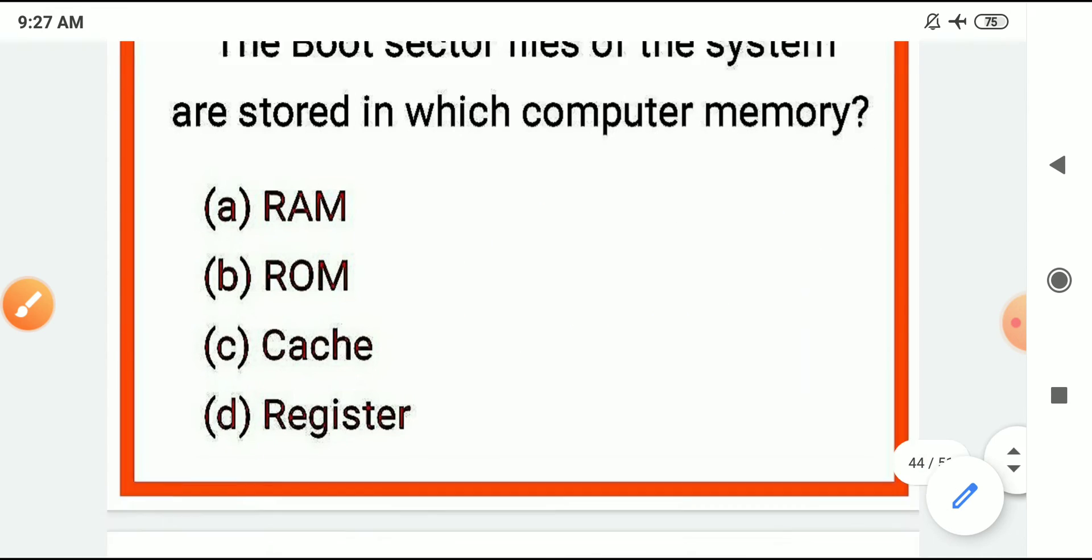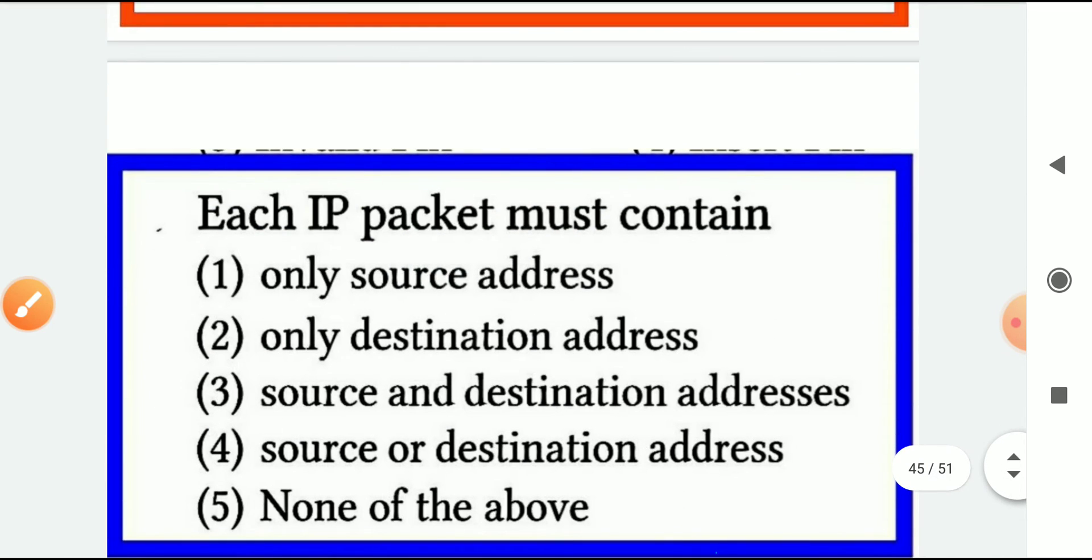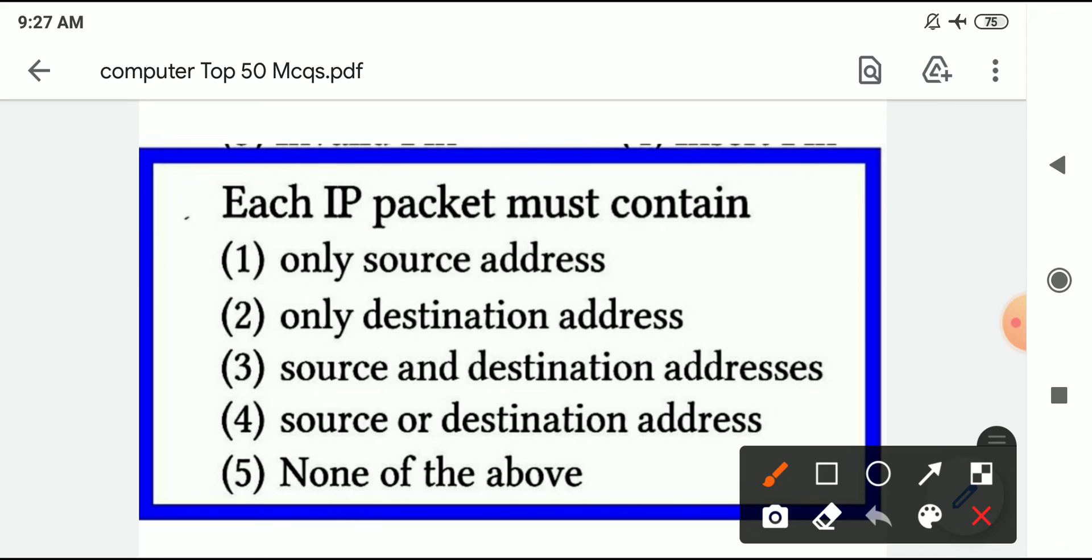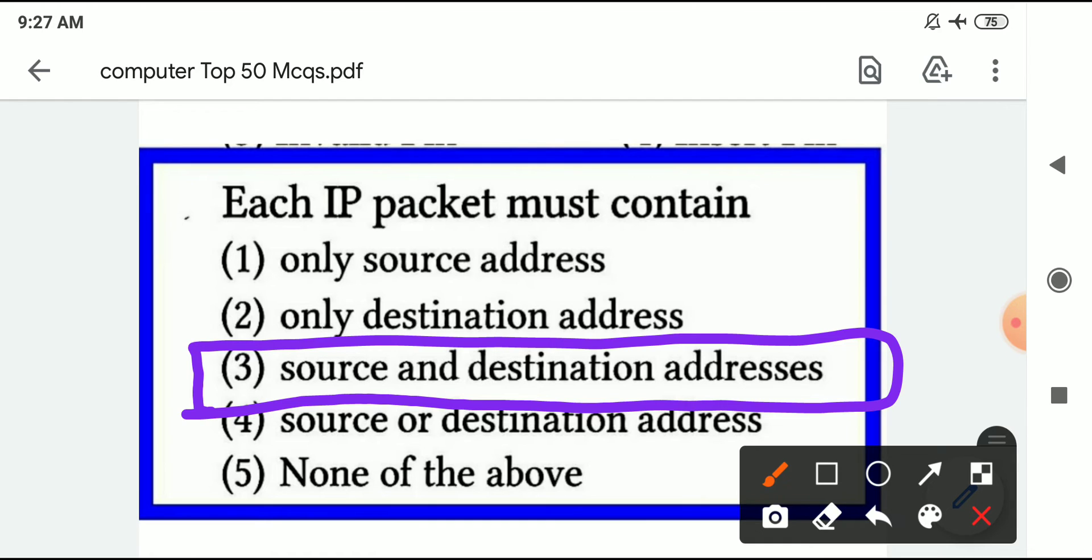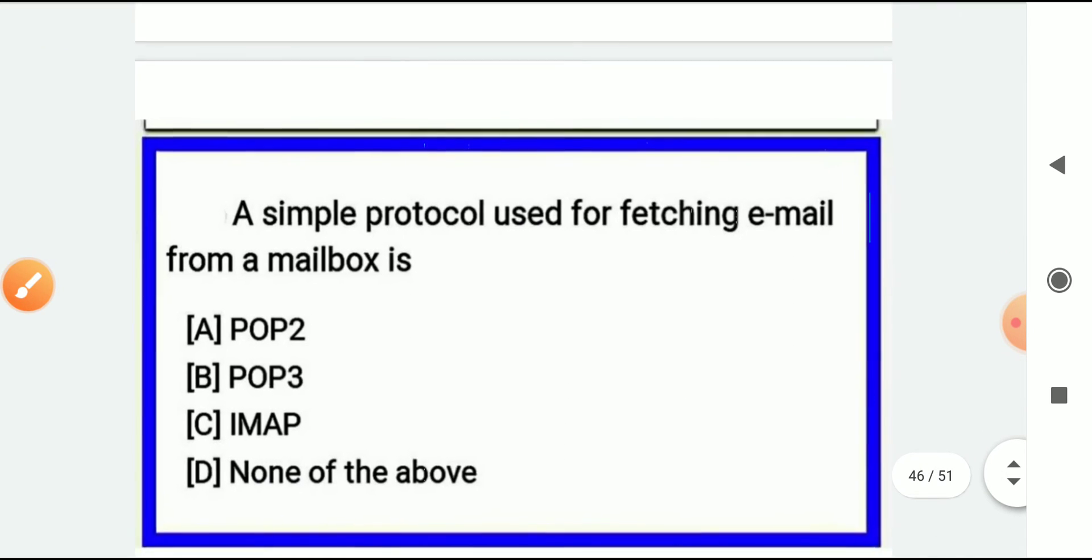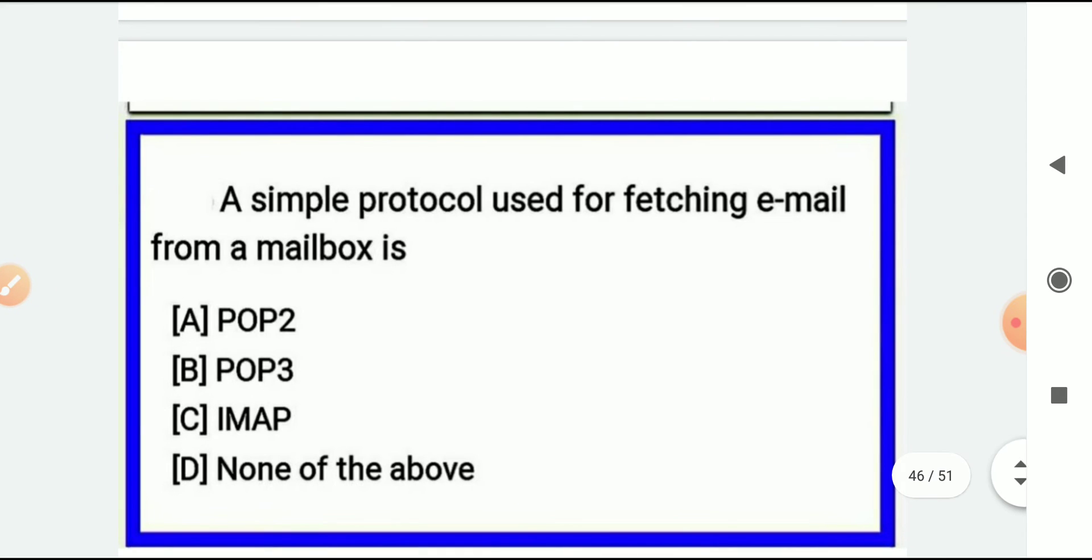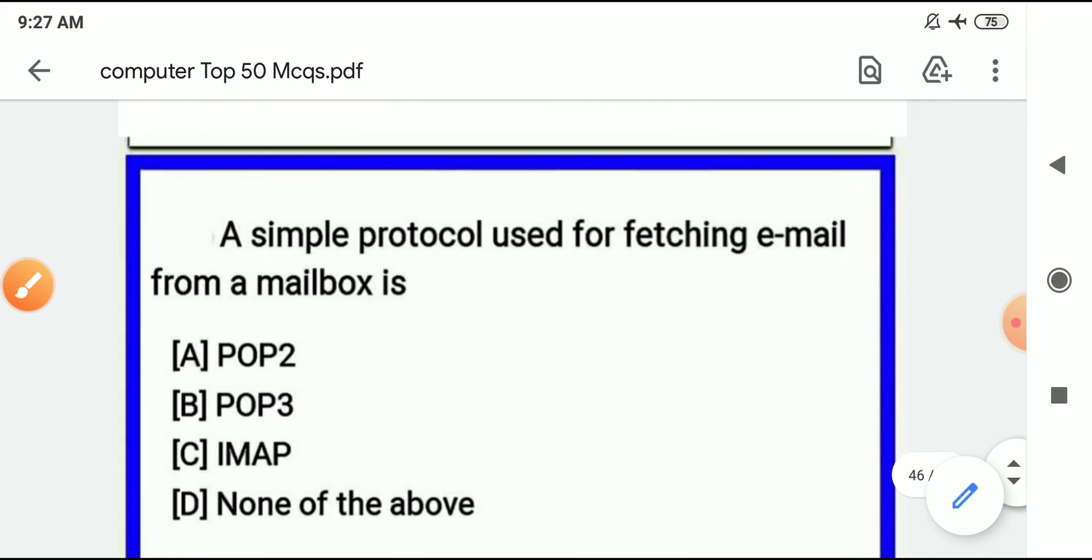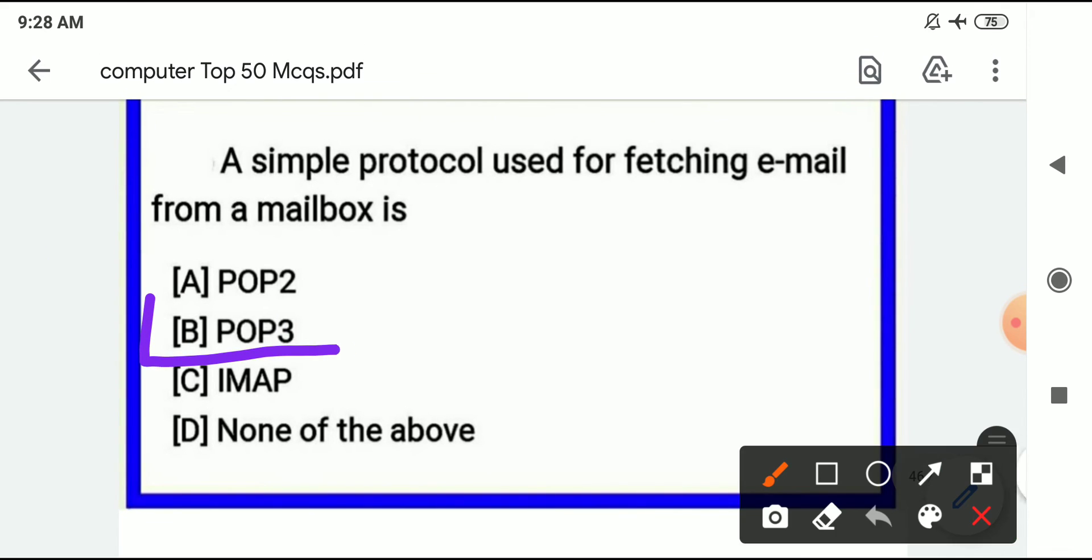Each IP packet must contain - IP packets should contain two things: source and destination address. Where to go and where to come from - both addresses should be in IP packets. A simple protocol used for fetching the email - that is Post Office Protocol 3, POP3.